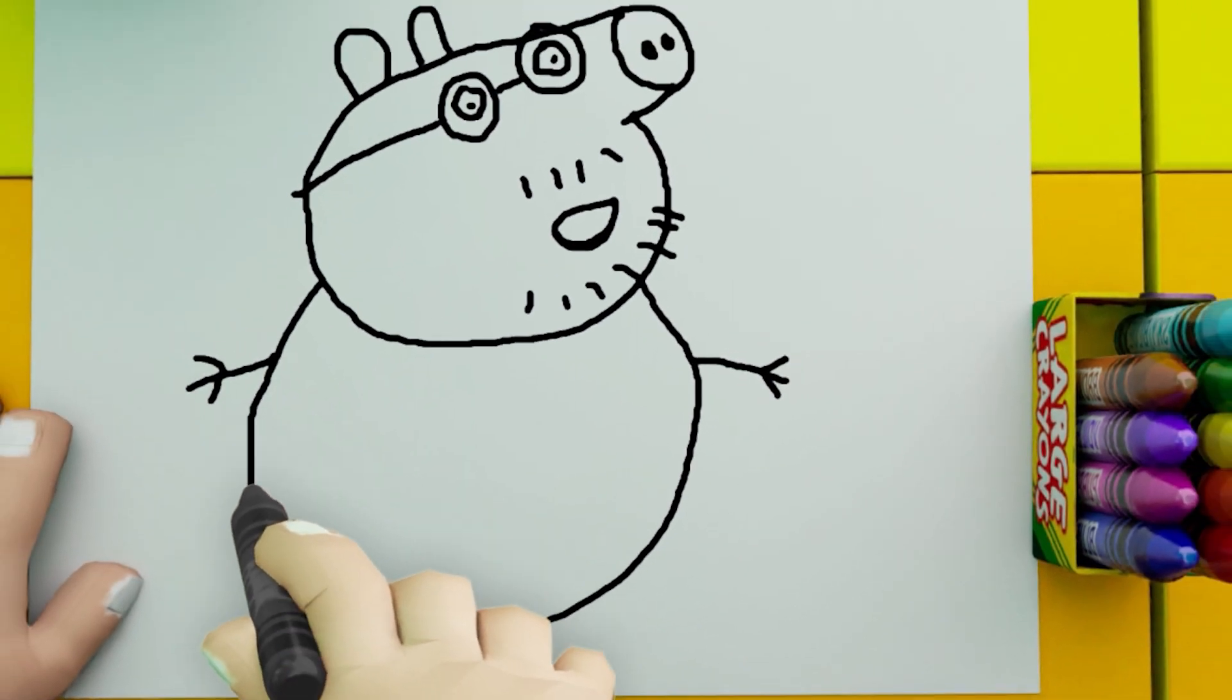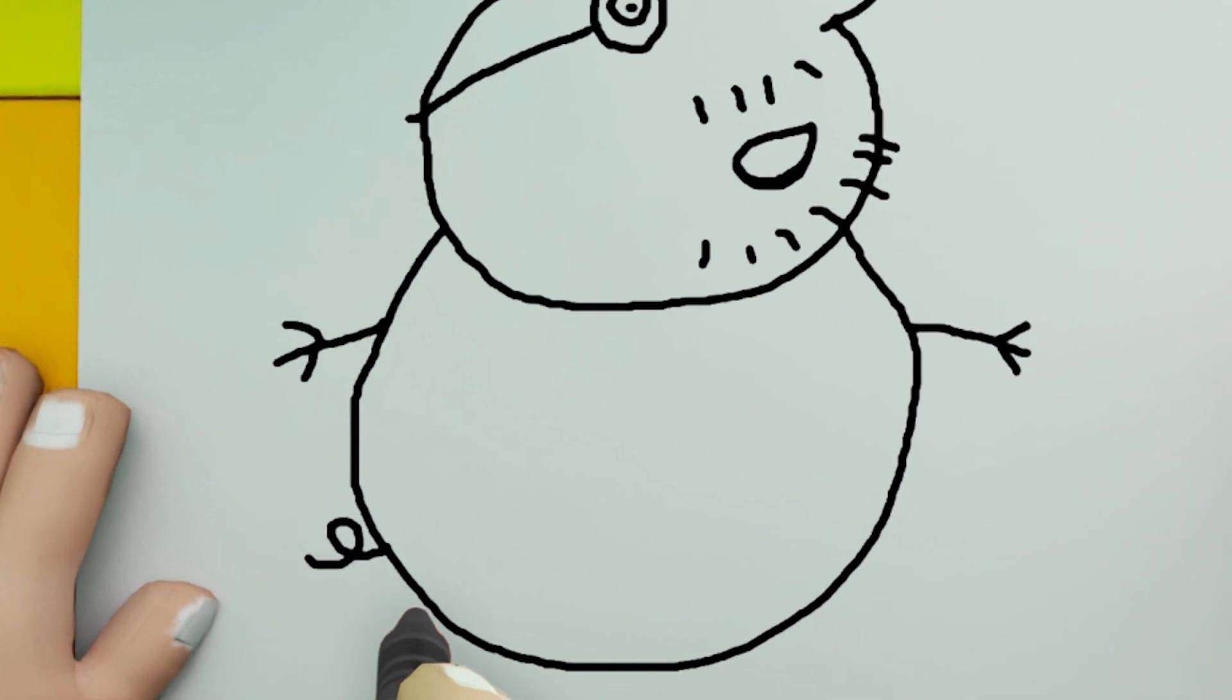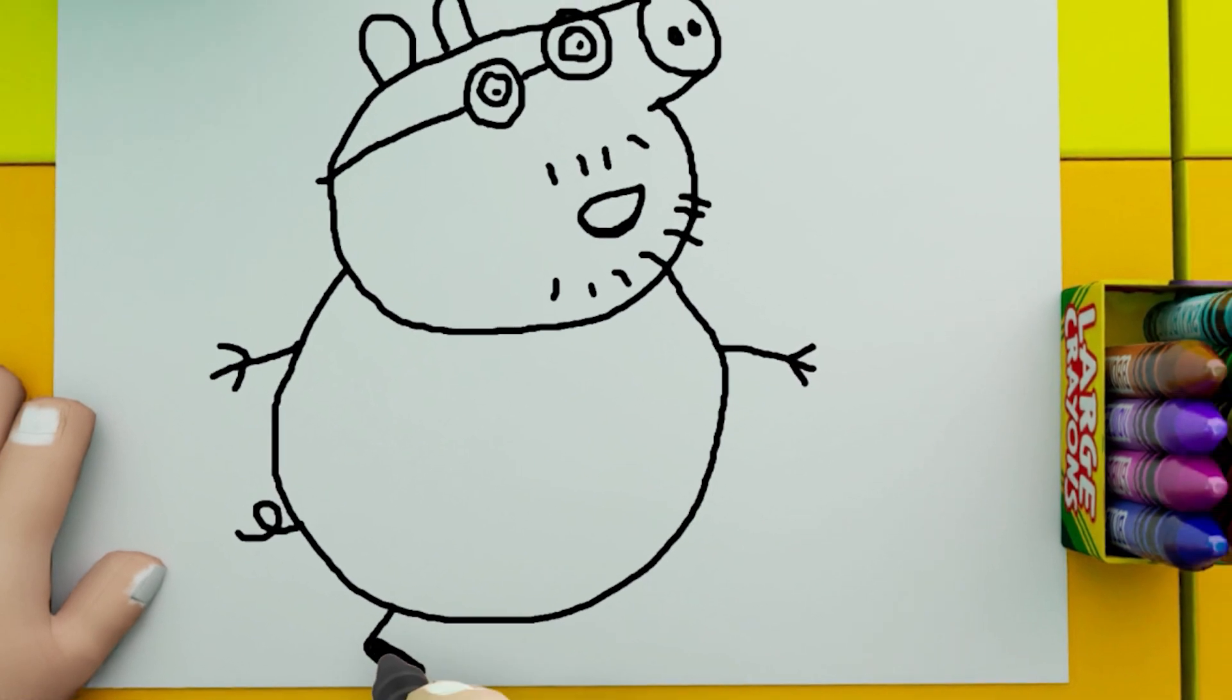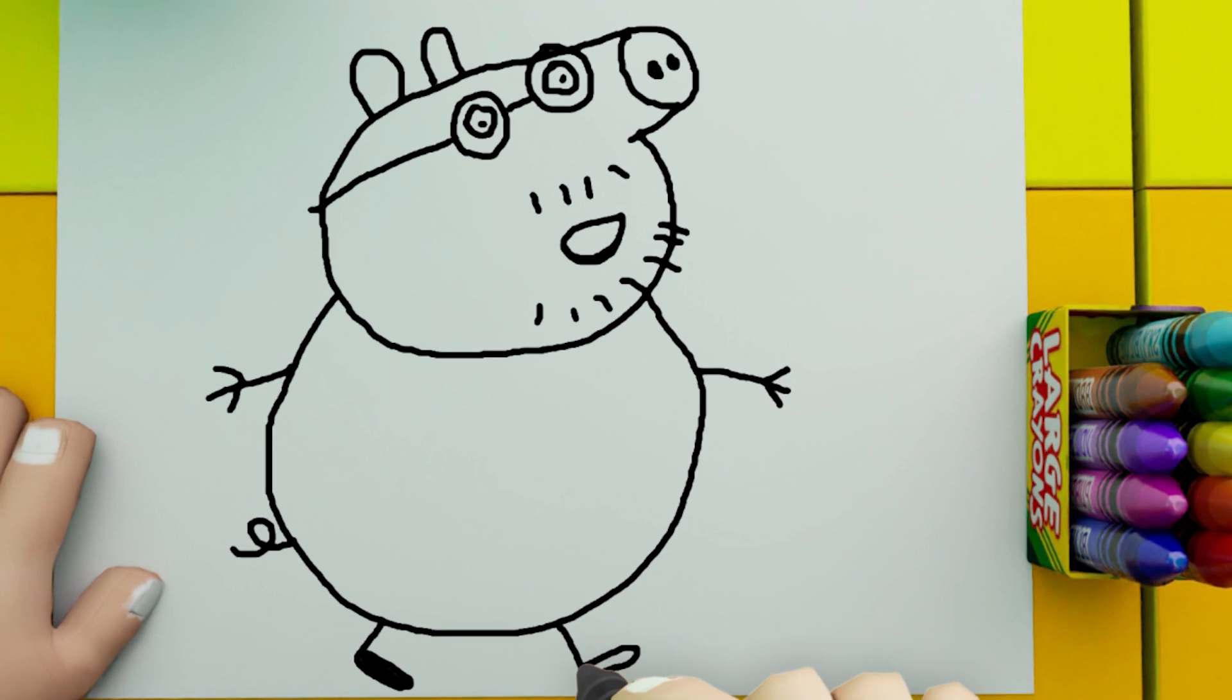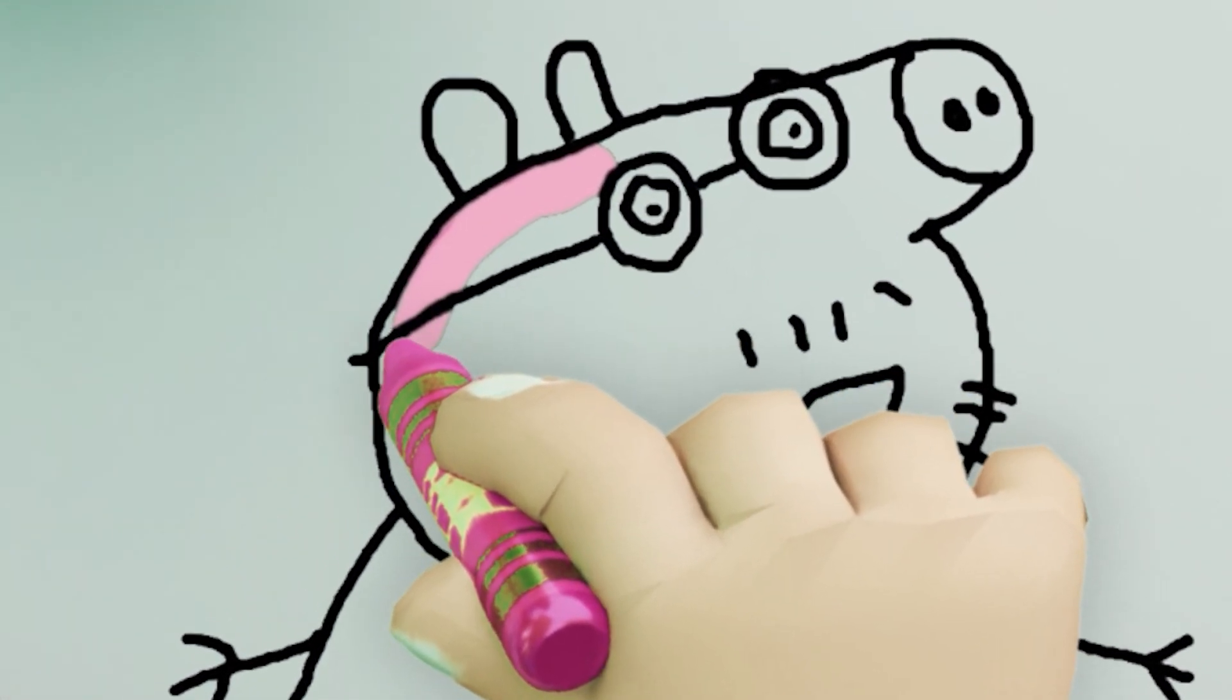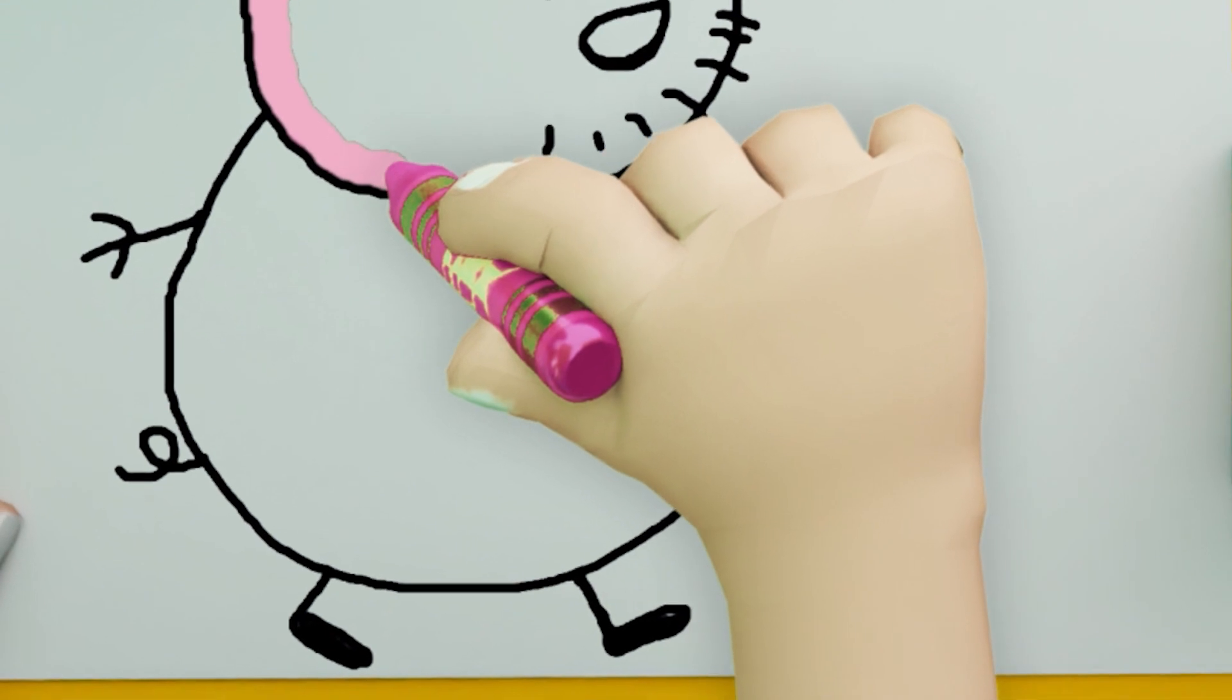Now we will make a body and make a right leg and make a small piece of black. We will do that on the left side and we will make a tail. After we will make a tail we will make a fill.